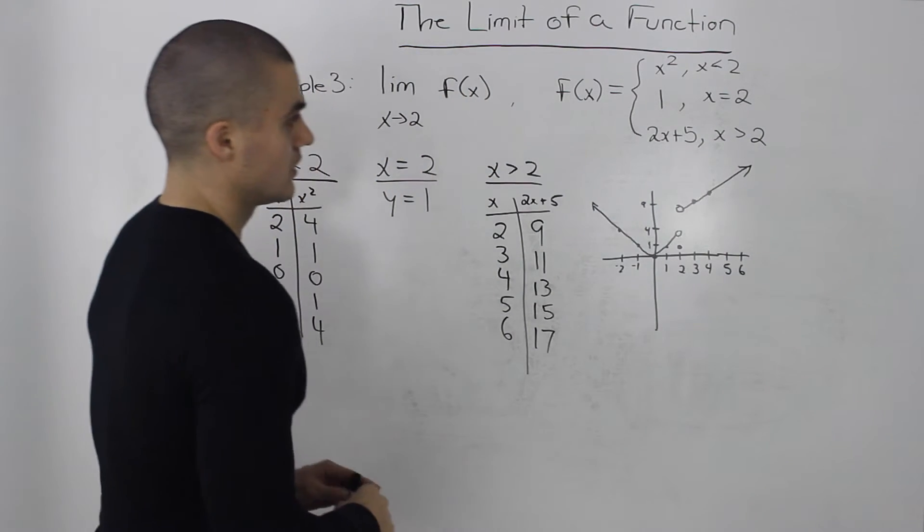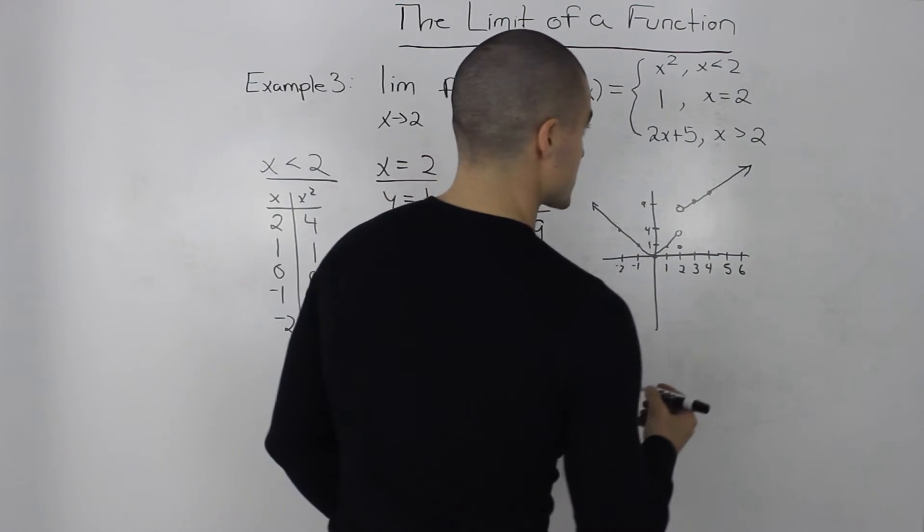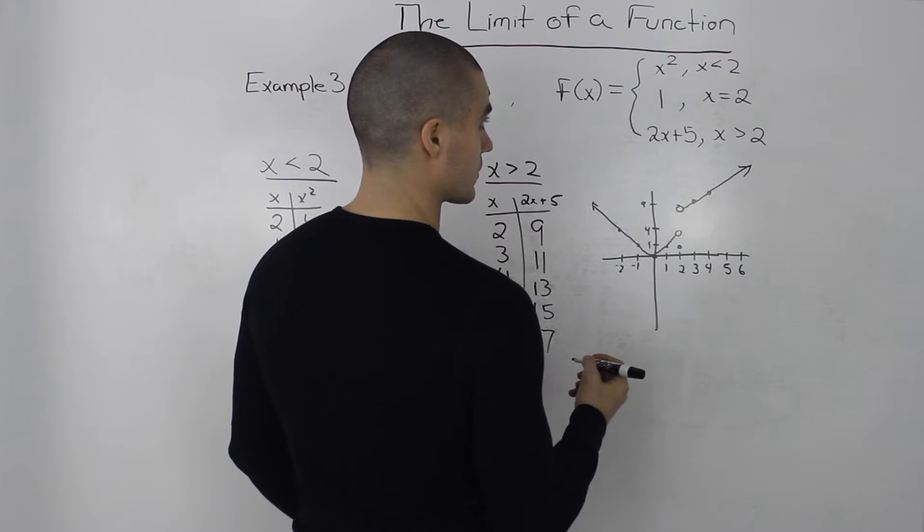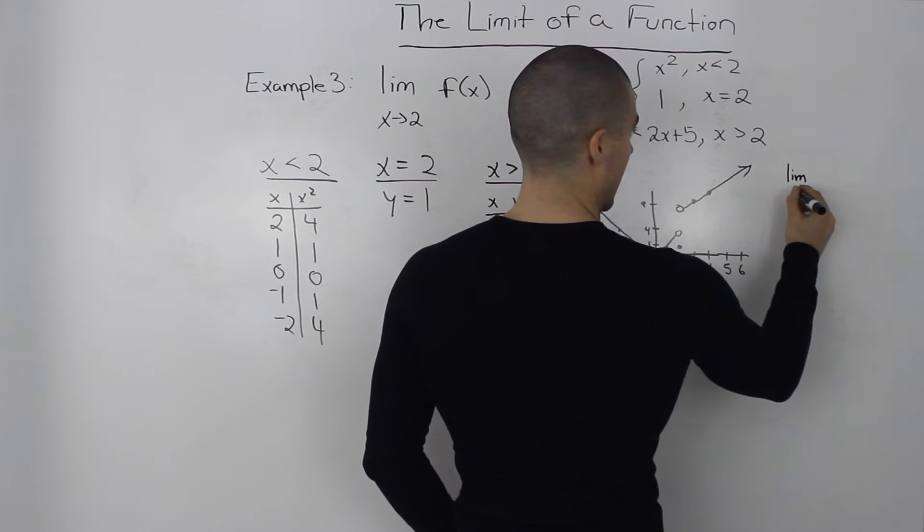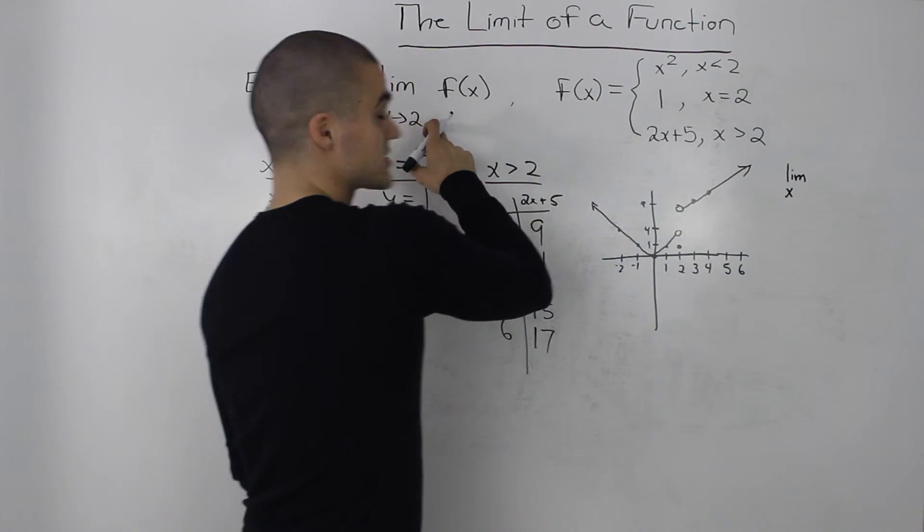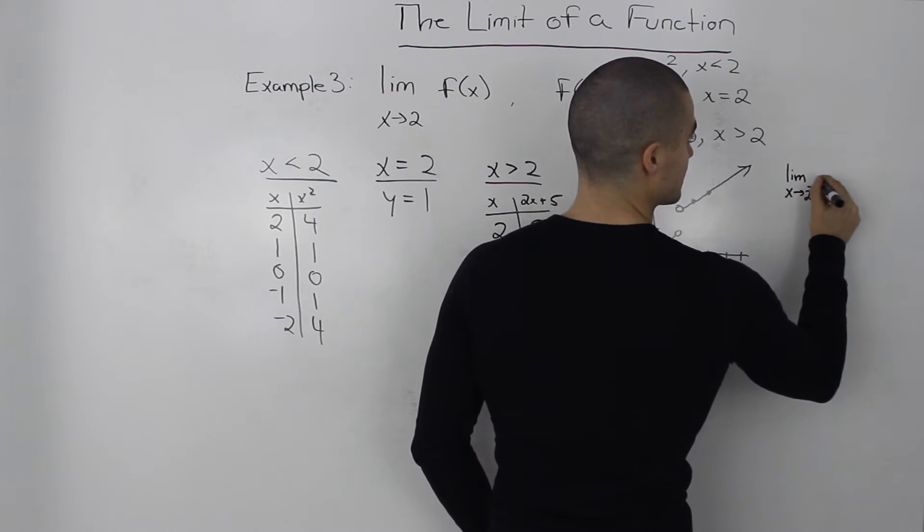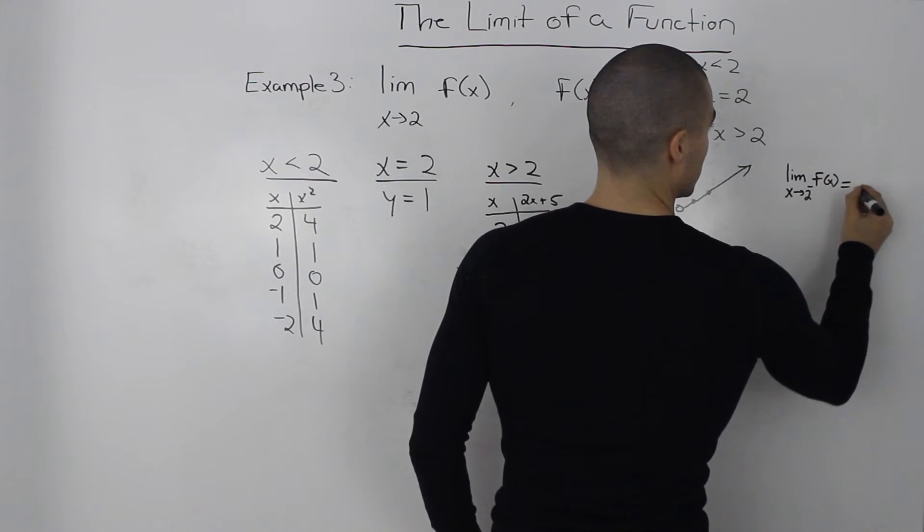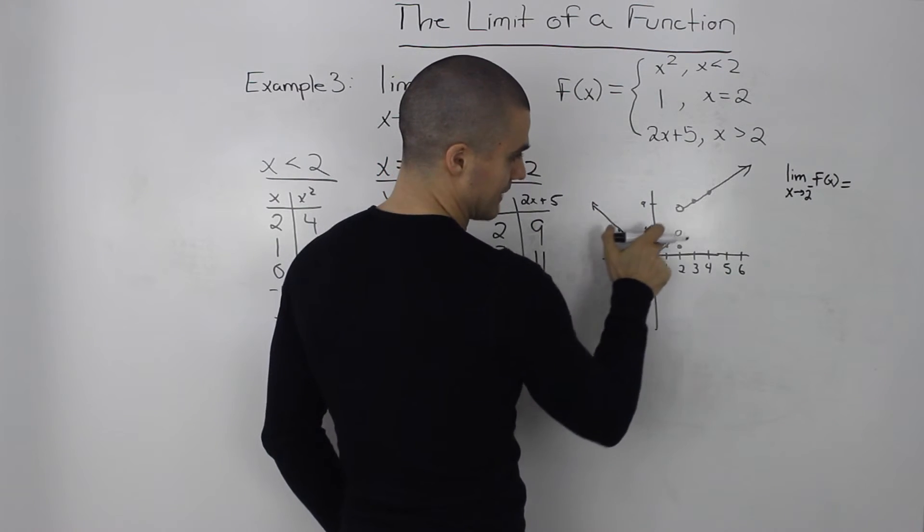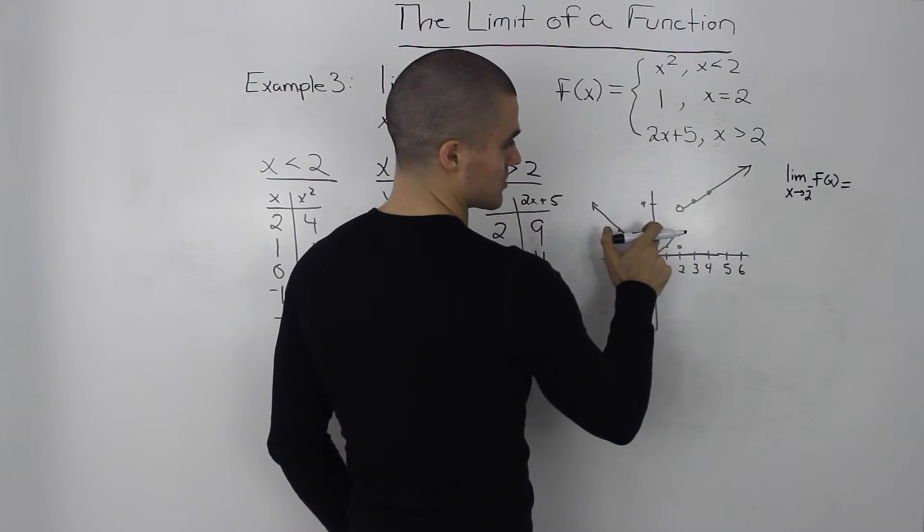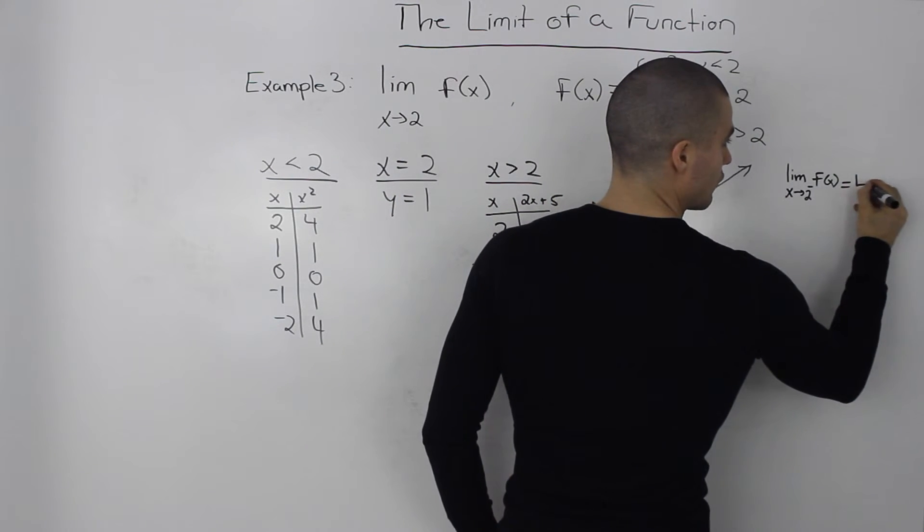Okay so looking at this graph we can find the one sided limits. So the limit as x approaches 2 from the left side of f of x, well if we look at the graph as x is approaching 2 from the left side the y value is approaching 4. It's not defined at 4 but it's approaching 4. So we would write 4 here.